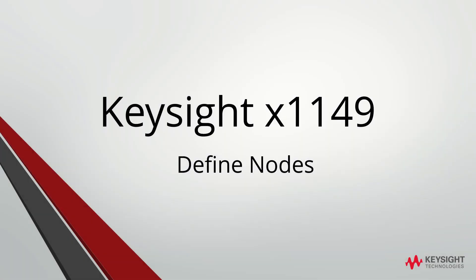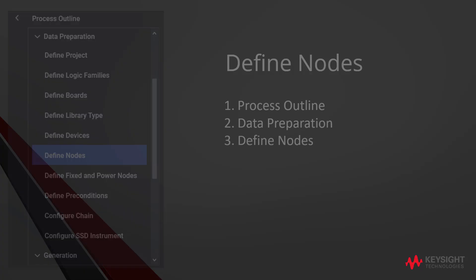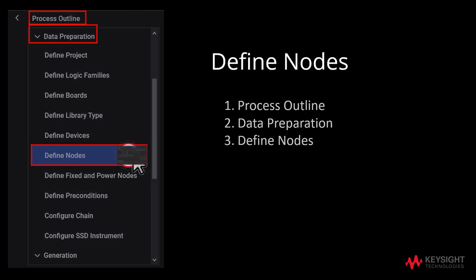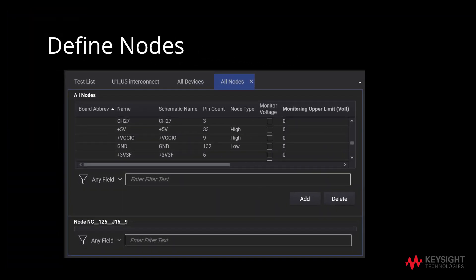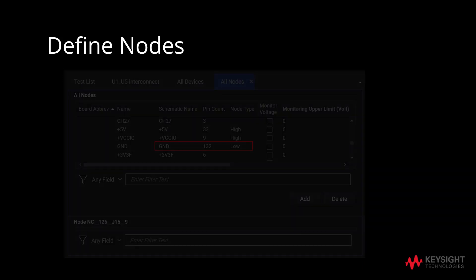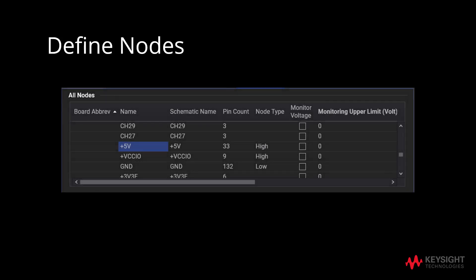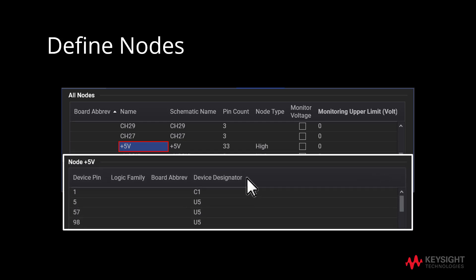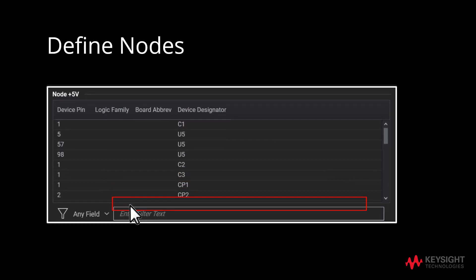We will move on to Define Nodes. We will proceed to Define Nodes by clicking on Process Outline, followed by Data Preparation and finally Define Nodes. Under All Nodes, the node type will specify either high or low. For instance, 5 volts will reflect high whereas ground will reflect low. If you double-click on one of the nodes, you can view the devices connected to that node. You may also search the device designator under the Filter Text.